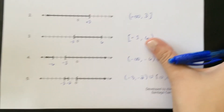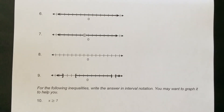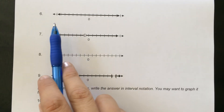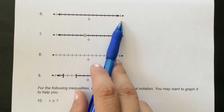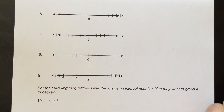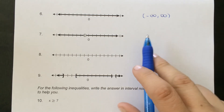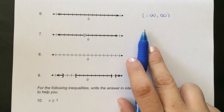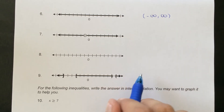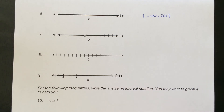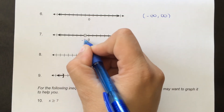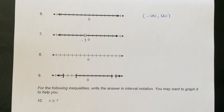On the next page we have more examples. One graph goes from negative infinity to positive infinity with no breaks, so we write negative infinity to positive infinity with parentheses. This represents all real numbers — a lot of people use this notation to represent all real numbers because it's much easier to write. Number 7 is special: it has a hole only at negative 1, meaning every number is included except negative 1.